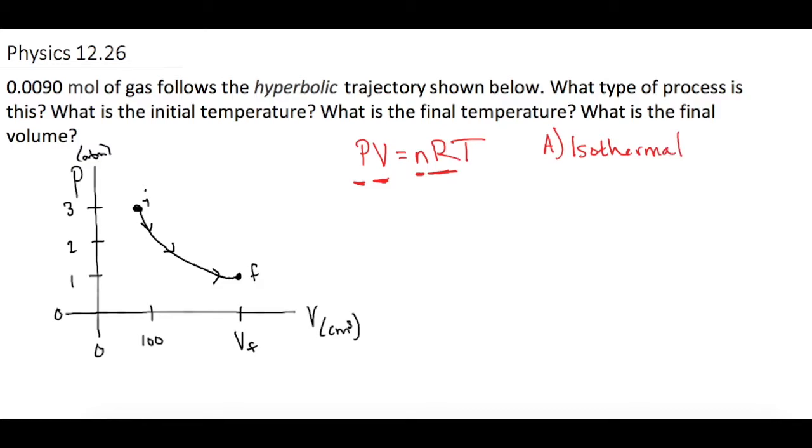Okay so now for part B they want to know what is the initial temperature. So we have 0.009 moles which stays constant like we talked about. The initial pressure is 3 atm. Let's convert that to standard units. So we know that 1 atm is 101.3 kilopascals and we know that 1 kilopascal is equal to 1000 pascals.